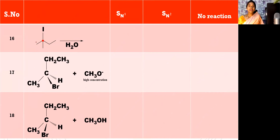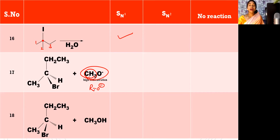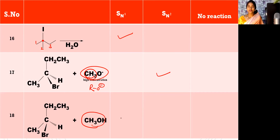See this carbon here, surrounded by one, two, three other carbons — so tertiary, SN1. And see a case where an alkoxide ion is present — RO⁻. Whenever an alkoxide ion is present, it is a strong nucleophile, so SN2. And here, alcohol is a weak nucleophile, so SN1. Alcohol SN1, alkoxide SN2.